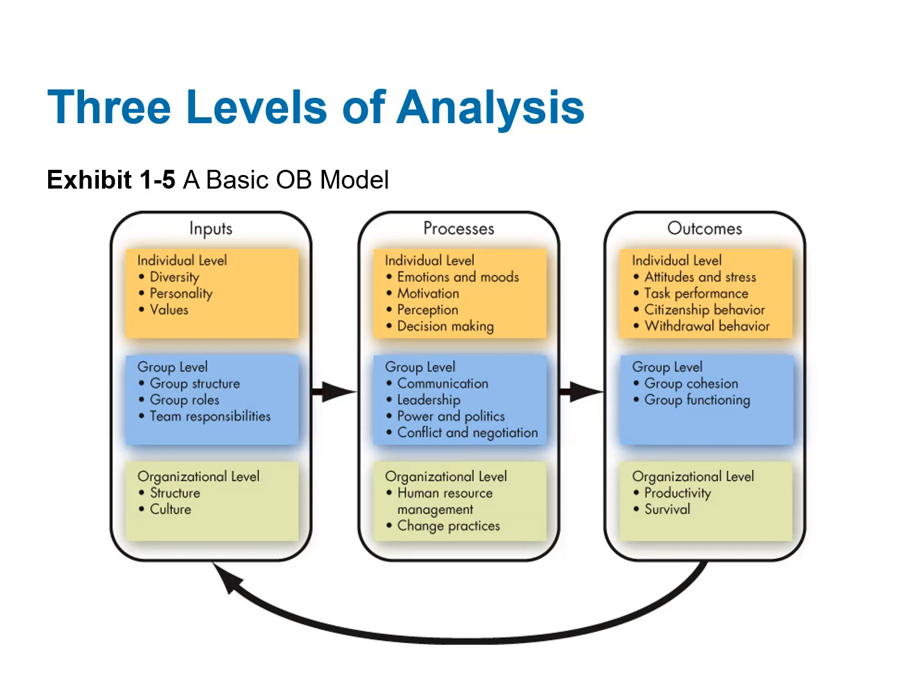Outcomes, then, are the key variables that we want to explain or predict. These outcomes are affected by other variables. The thinking is, if we can understand the things that come before outcomes, we might be able to change those things so that we can have an impact on the outcomes. Group structure impacts communication, which impacts how the group functions.